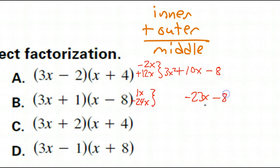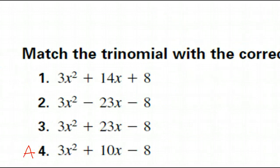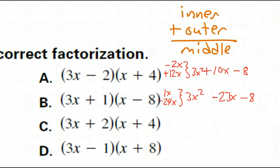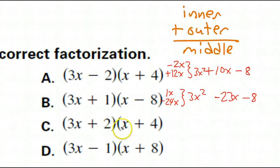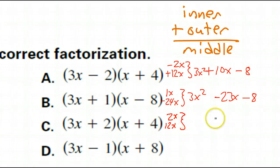Inner I have 2x, outer I have 12x — that gives middle of positive 14x. Positive 2 times positive 4 is positive 8. That makes 3x squared plus 14x plus 8 — that's C.